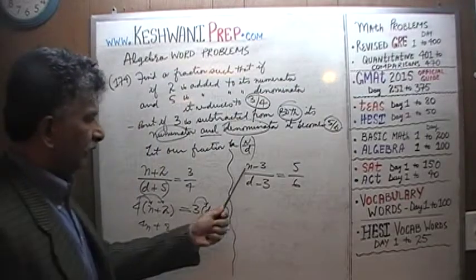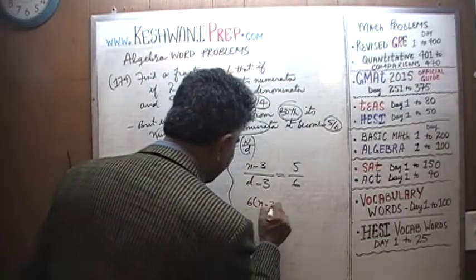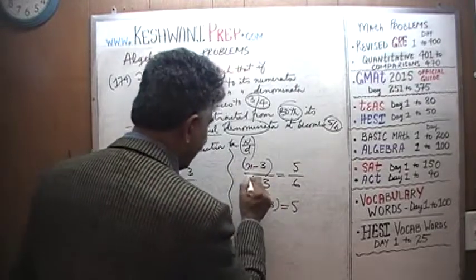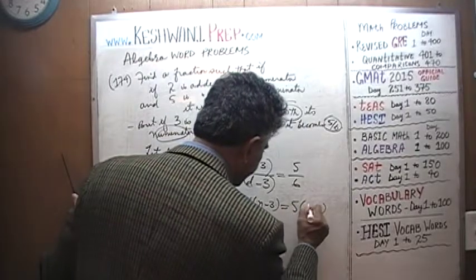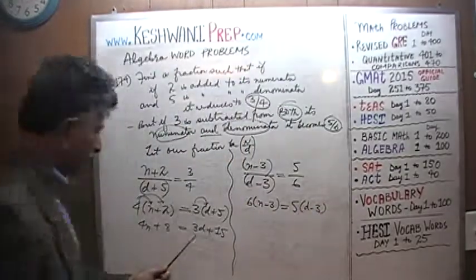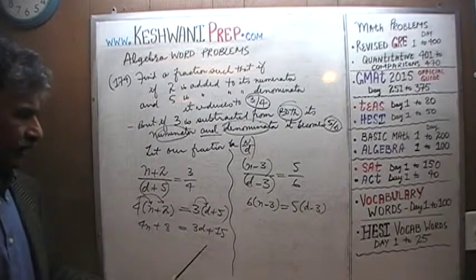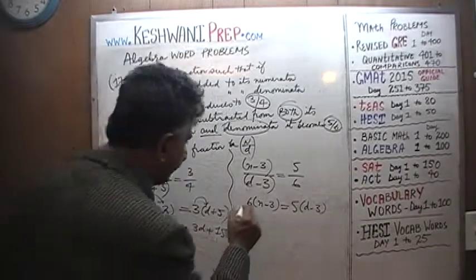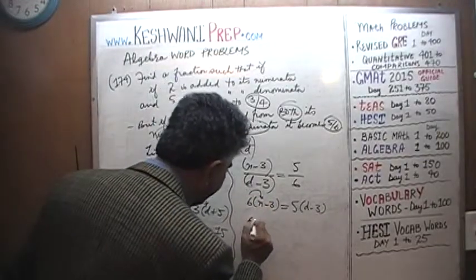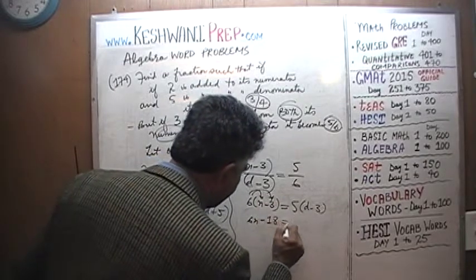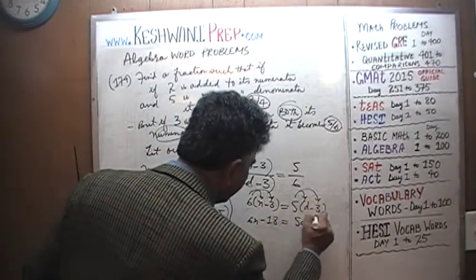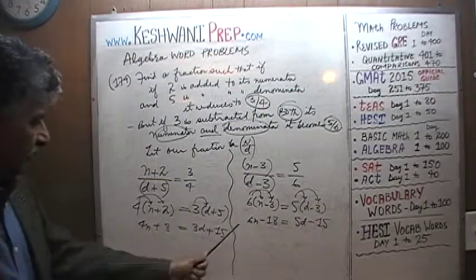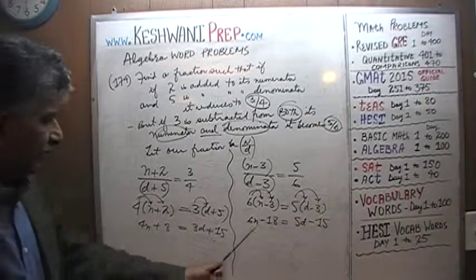Let's see what we find in the second equation. Cross multiply again: we get 6 times (N minus 3) equals 5 times (D minus 3), which gives 6N minus 18 equals 5D minus 15. Looking at the coefficients, I see 4N here and 6N here, with 3D and 5D.